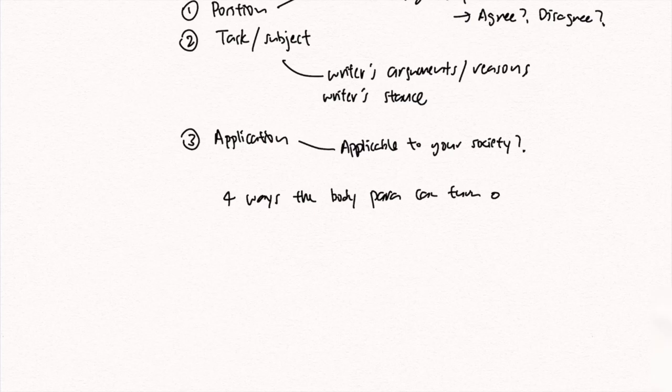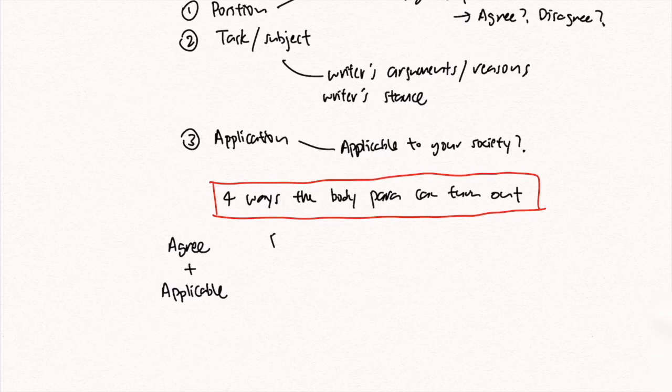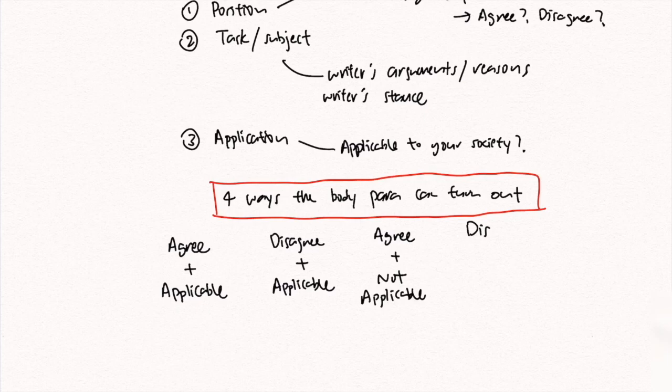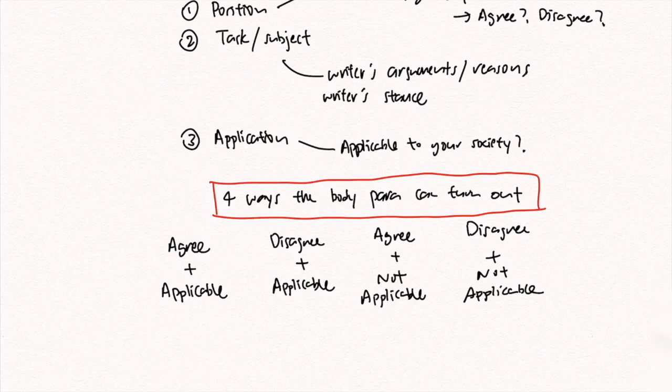There are actually four ways the body paragraph can turn out. You can agree with the writer and find it applicable to your society. You can disagree with the author but find it applicable to your society. You can agree with the writer but find it not applicable to your society. Or you can disagree with the author and find it not applicable to your society. Do note that just because you agree with the writer's point does not mean you have to say it is applicable — it can still be inapplicable to the local context. Do remember to include all this information in the introduction.